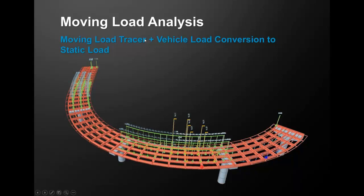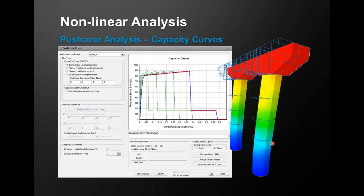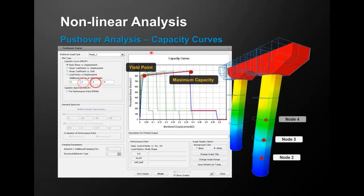For moving load analysis per AASHTO or Eurocode, we have a feature called Moving Load Tracer that locates the vehicle position causing maximum and minimum effects at a particular location. You can set the live load analysis control and get normal and concurrent forces for substructure design. For nonlinear analysis, you can do a full-fledged pushover analysis to see progressive damage and arrive at a performance point.